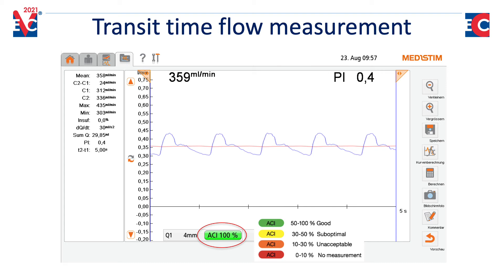Then look at the mean flow, which is the numerical value of the red horizontal line. The maximum flow and the minimal flow should be considered, as well as the Pulsatility Index (PI), which is defined as the difference between the maximum and minimum flow divided by the mean flow. In vascular access, we typically have a low PI — significantly below 1 — because in the absence of peripheral resistance there is no large difference between maximum and minimum flow. In general, we have a PI of around 0.5.